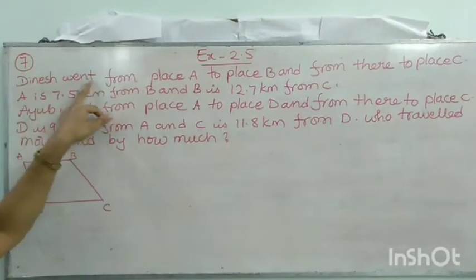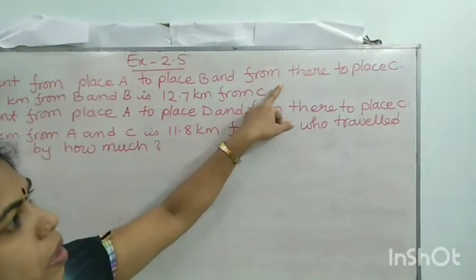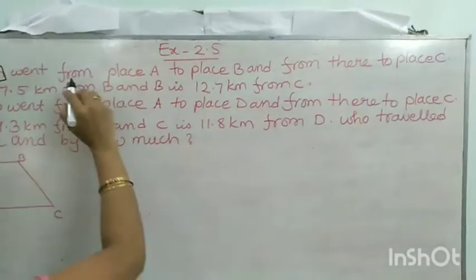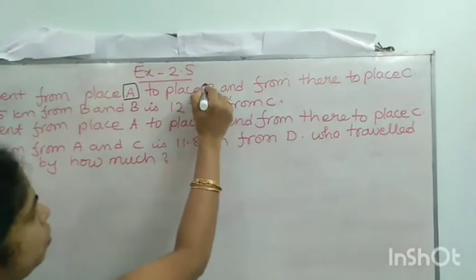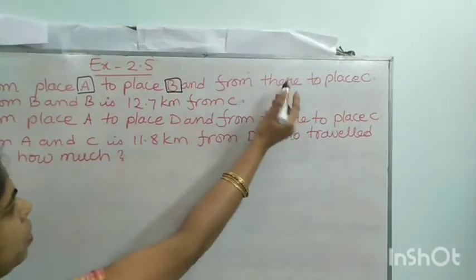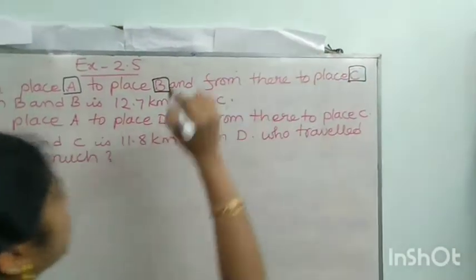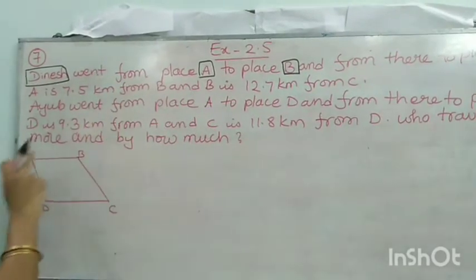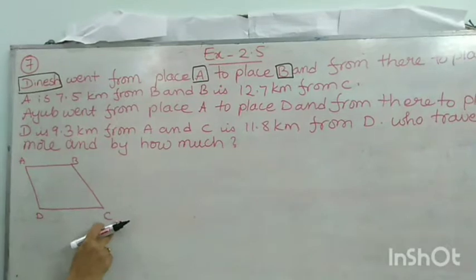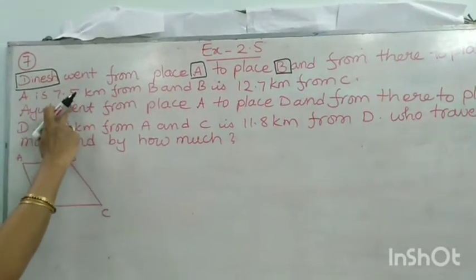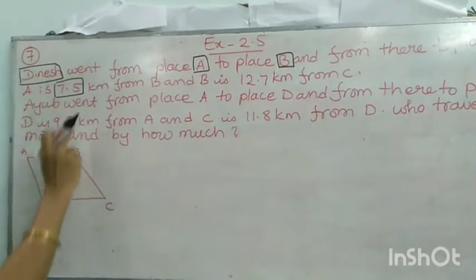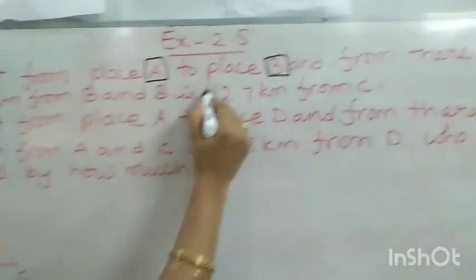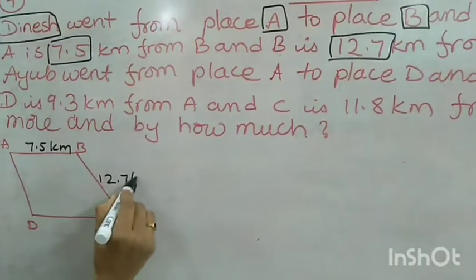Dinesh went from place A to place B, and from there to place C. He started from place A, travelled to place B, and then from place B to place C. A is 7.5 kilometres from B, and B is 12.7 kilometres from C.